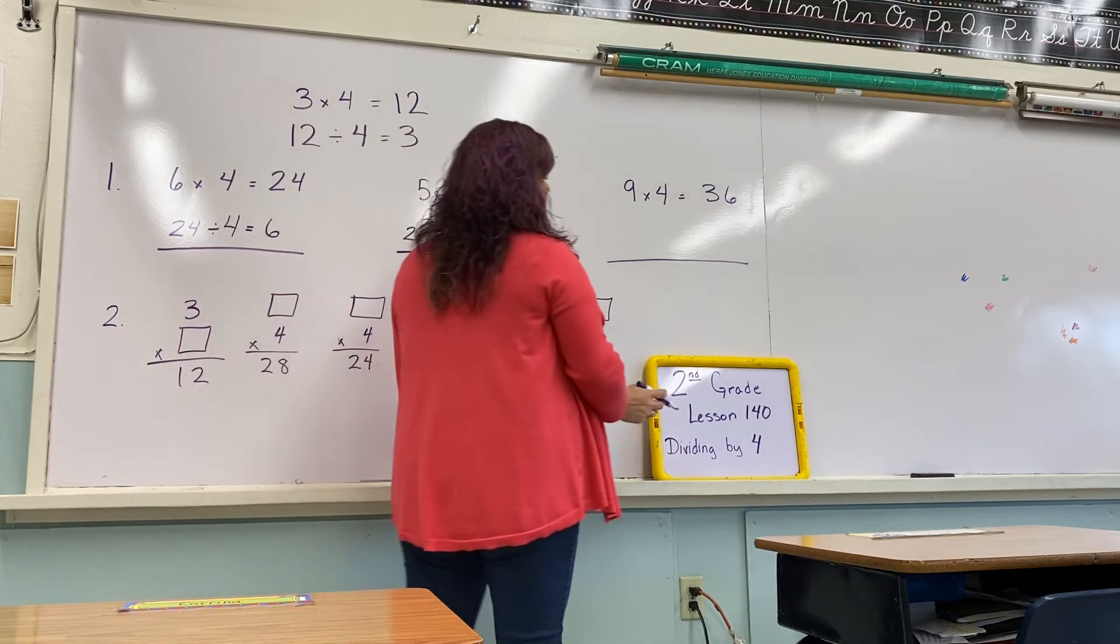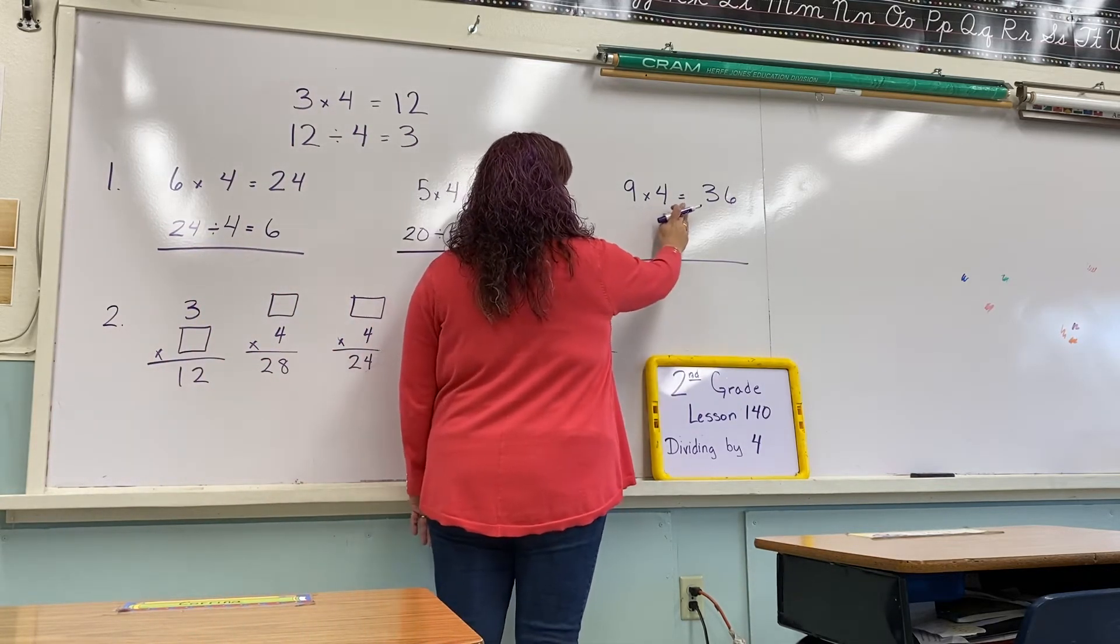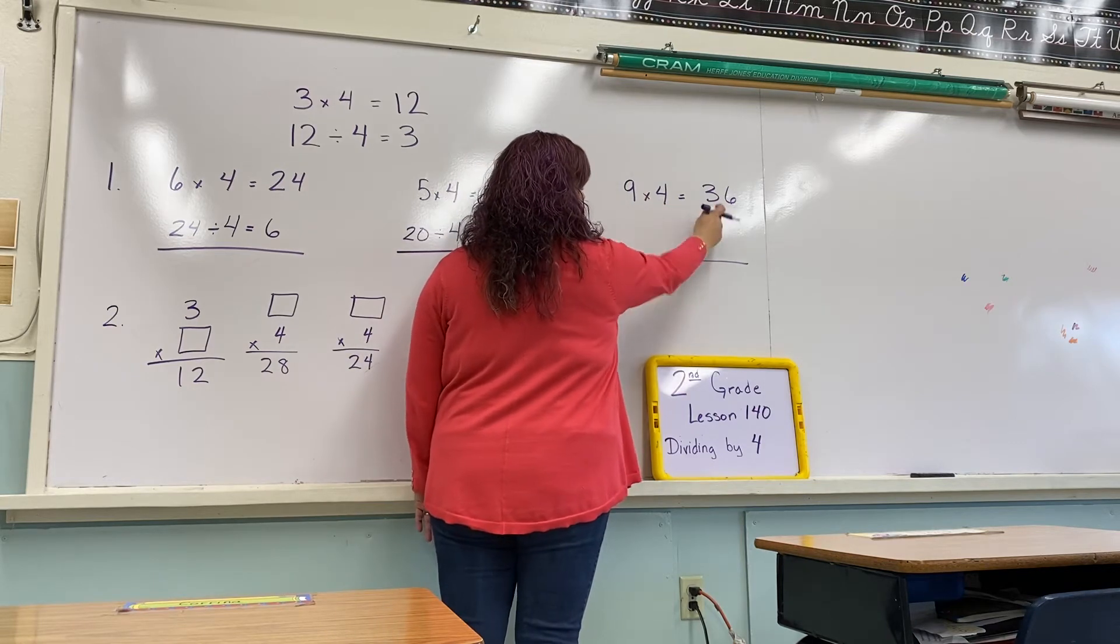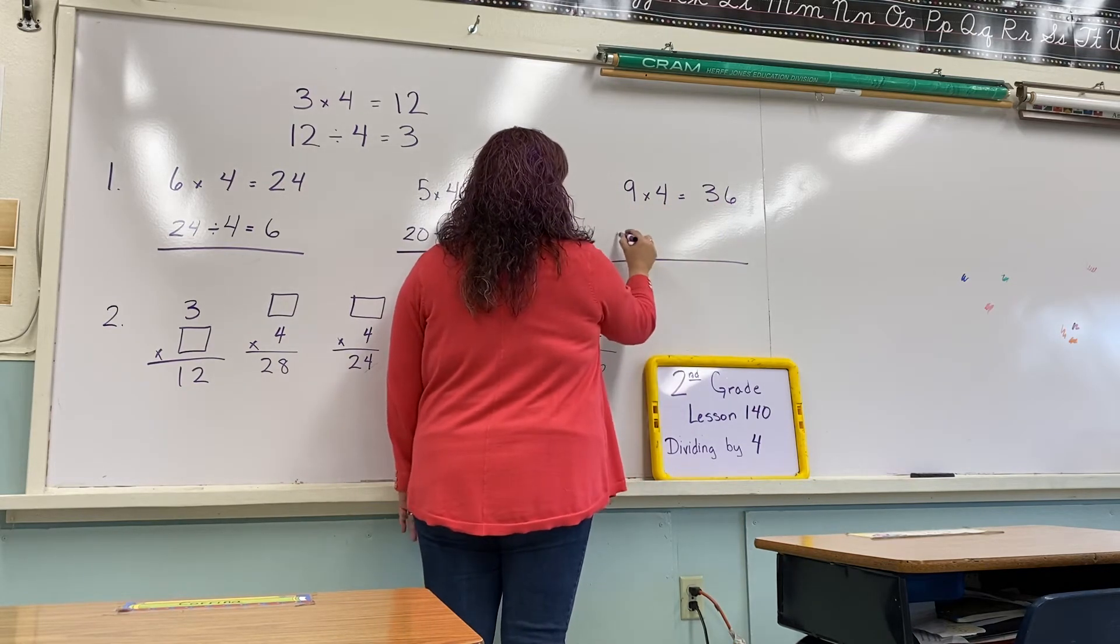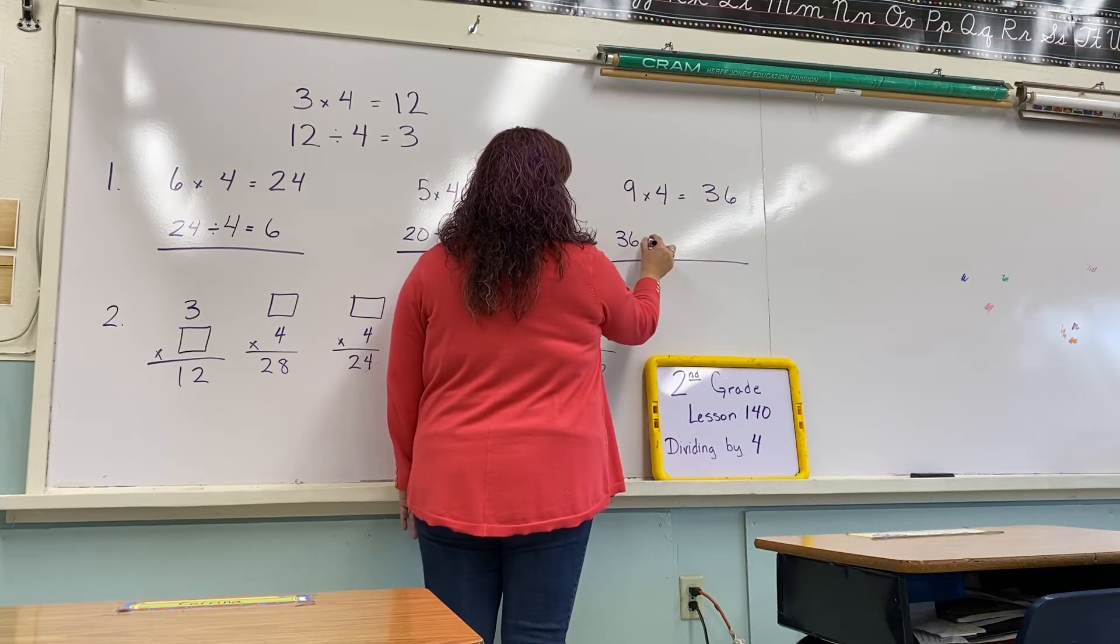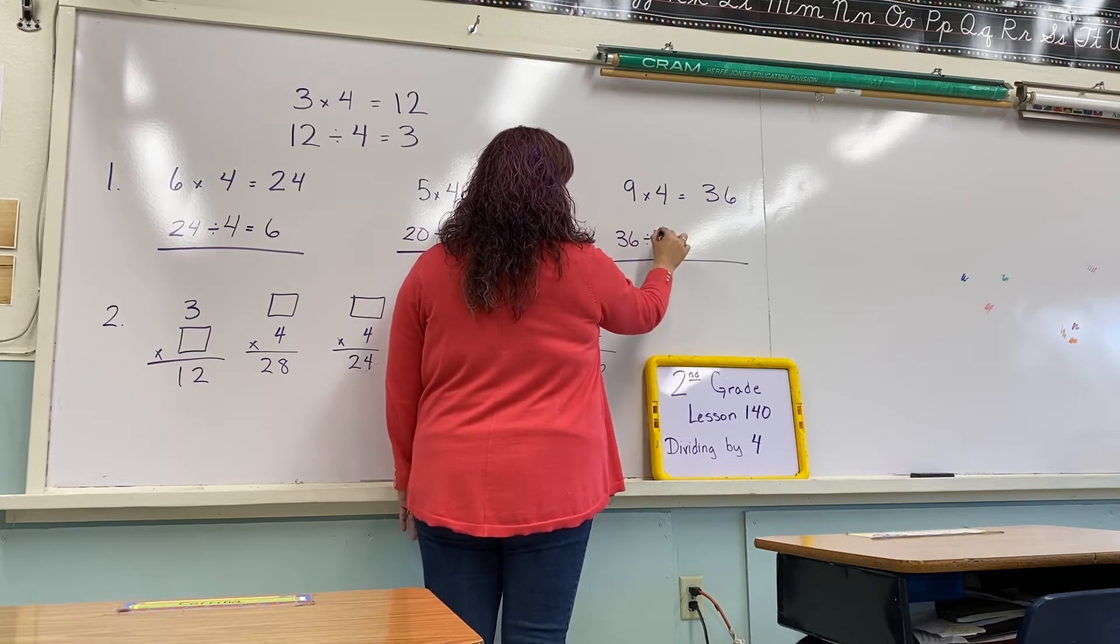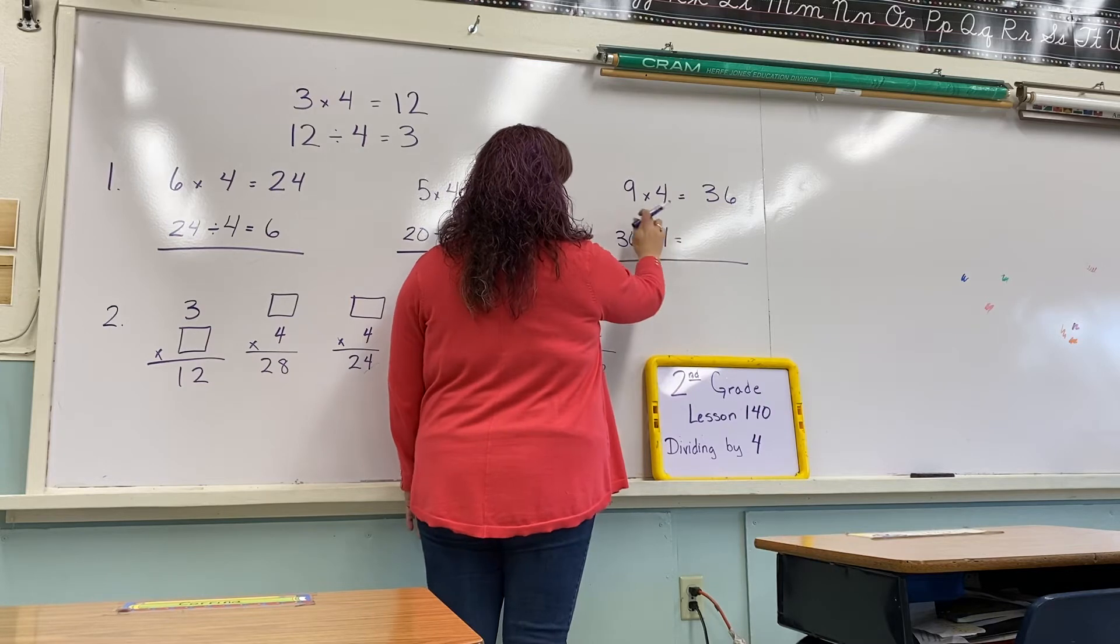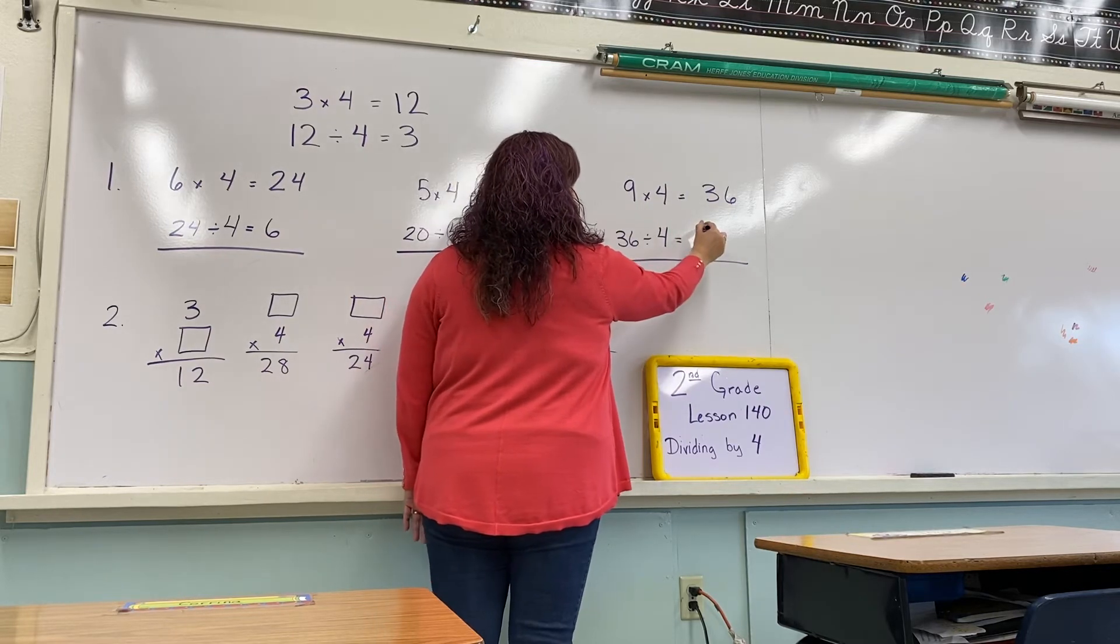Last one on number 1. 9 times 4 equals 36. We start with our answer in a division problem. 36 divided into 4 groups equals, how many are you going to have in each group? 9.